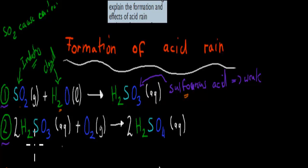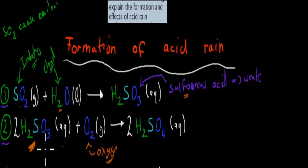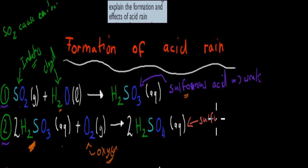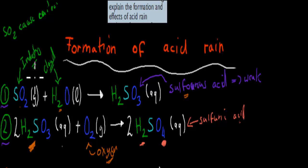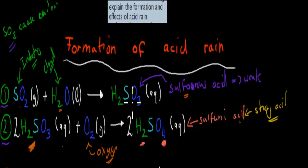Sulfurous acid is a relatively weak acid and wouldn't cause too many problems on its own. But once it has formed, it can come in contact with oxygen — that's the second step. Our sulfurous acid reacts with oxygen in the atmosphere, and an extra oxygen is incorporated into the chemical structure. Now we have sulfuric acid, H2SO4, being formed — a strong acid. This is how sulfur dioxide ultimately produces a strong acid.